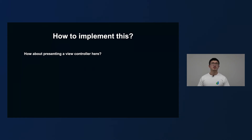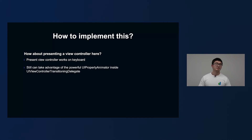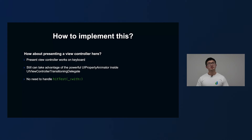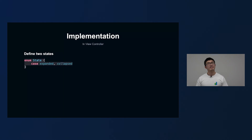So how can we resolve these issues? Then we came up with another idea: can we present a view controller here? You might feel surprised, but presenting a view controller indeed works on keyboard — the keyboard is just a different window. With the power of UIViewControllerTransitioningDelegate, we can still use UIPropertyAnimator to handle the animation. Because the presented view controller is a layer above the whole keyboard, manually handling touch events is not needed anymore. And with the help of UIPresentationController, handling background dimming and device rotation becomes very easy. So here is the implementation detail. First, in the view controller, we need to define two states — expanded and collapsed — and define how the view should be laid out in a configUI method.